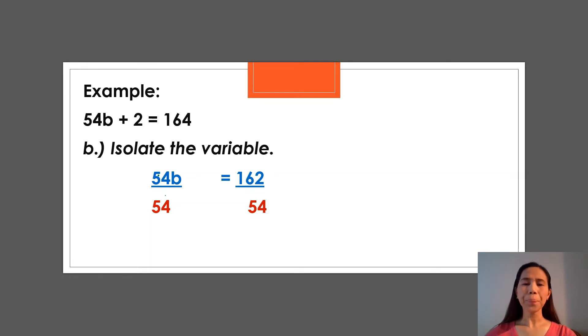So if we cancel this 1, 54 ÷ 54 = 1. So we could just write b or 1b. It's okay enough to write 1 there. It automatically represents 1. So 1b = 162 ÷ 54 = 3. You get it? So that's how we do. Combine like terms and then isolate the variable.